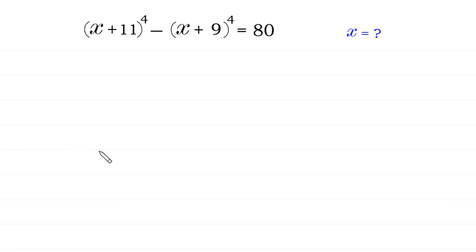Hello, welcome to how to solve this equation for x. The equation is: x plus 11, whole to the power 4, minus x plus 9, whole to the power 4, is equal to 80.